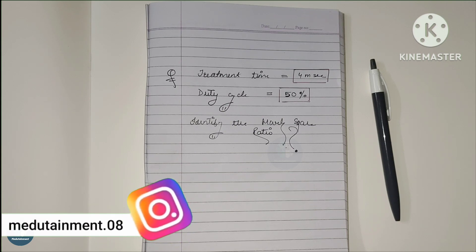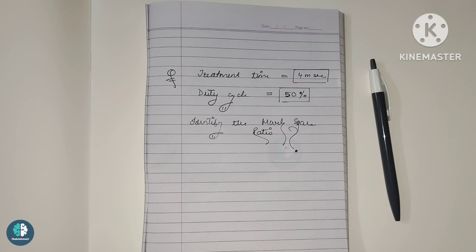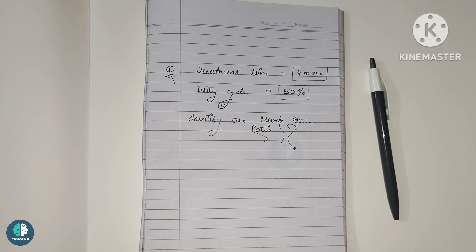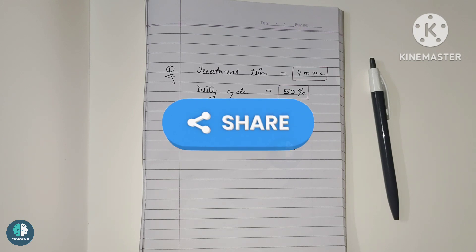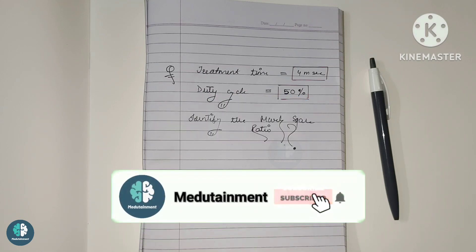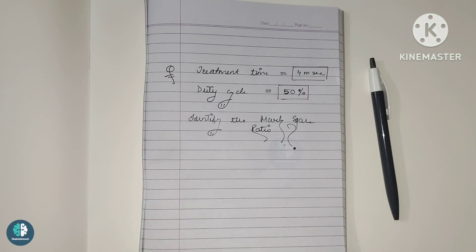So this was the explanation about the various modes of application of ultrasound — basically the continuous mode and the pulsed mode. The pulsed mode in turn has two important things: the mark space ratio and the duty cycle. I hope you are clear with all your concepts regarding the modes of application of ultrasound, the continuous and pulsed modes, and the important terms — mark space ratio and duty cycle. If so, please give it a thumbs up and share. If you haven't subscribed yet, please do, and follow me on social media. See you in the next video. Until next time, Ashutosh here, signing off.